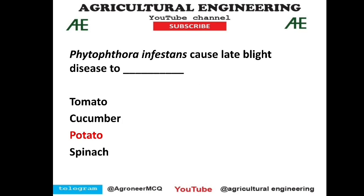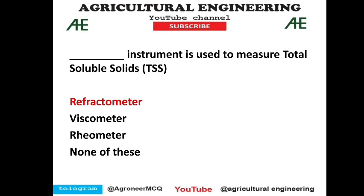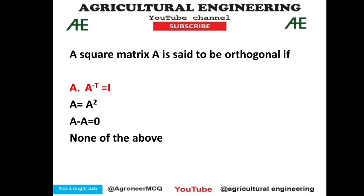Phytophthora infestans causes late blight disease — a general agriculture question about a disease on potato. The refractometer is used to measure Total Soluble Solids (TSS). A square matrix A is called orthogonal if A multiplied by A-transpose equals the identity matrix — option 1 is correct.